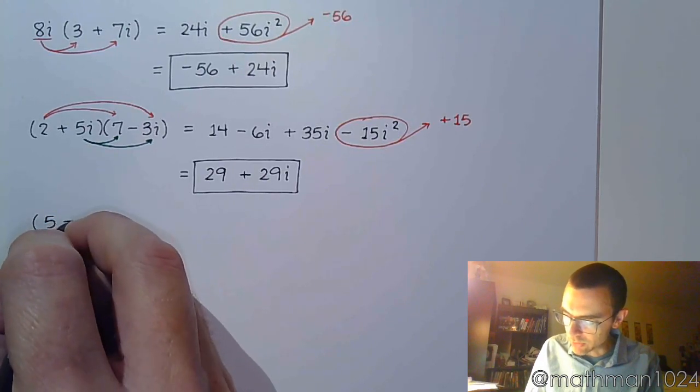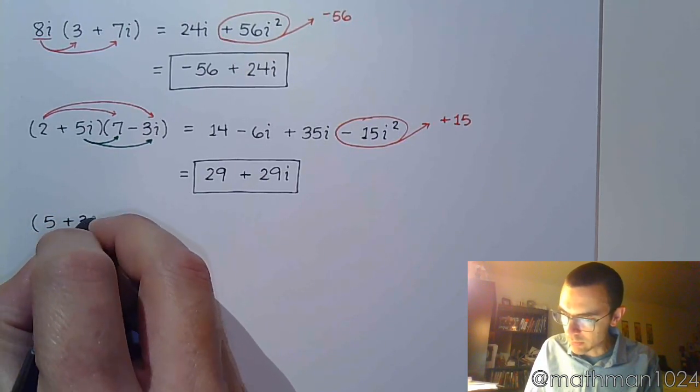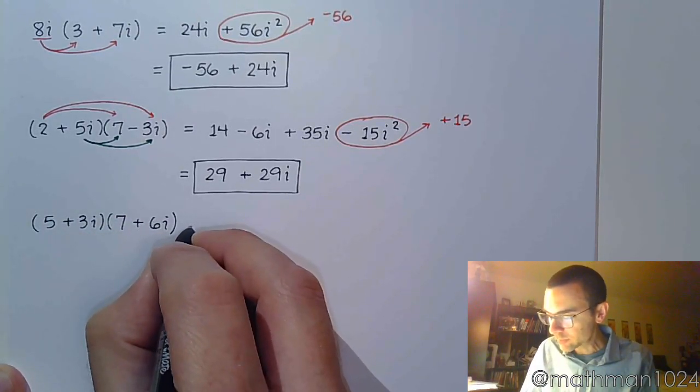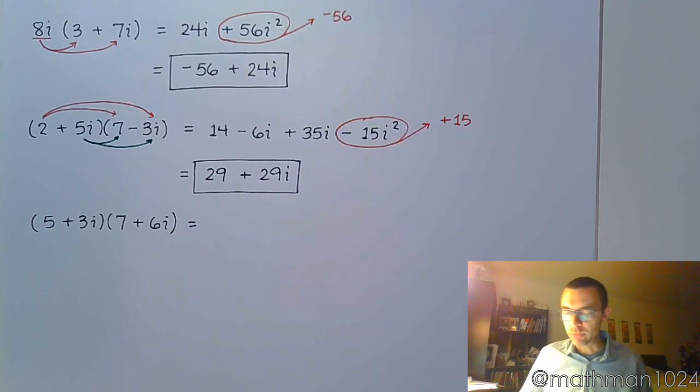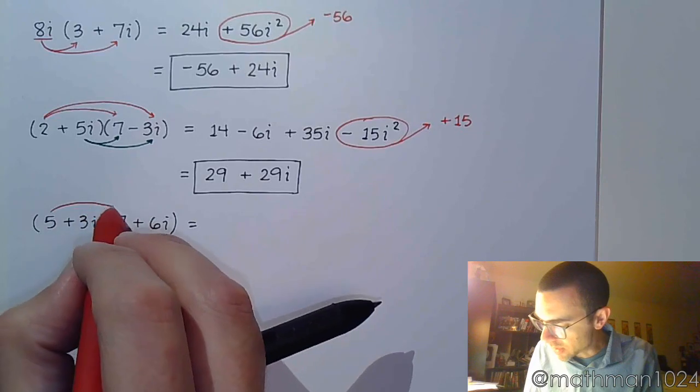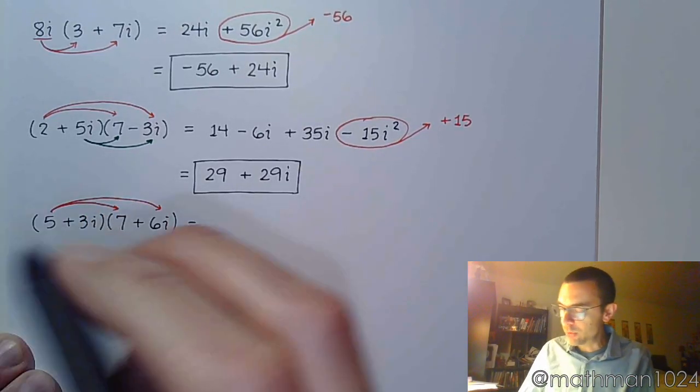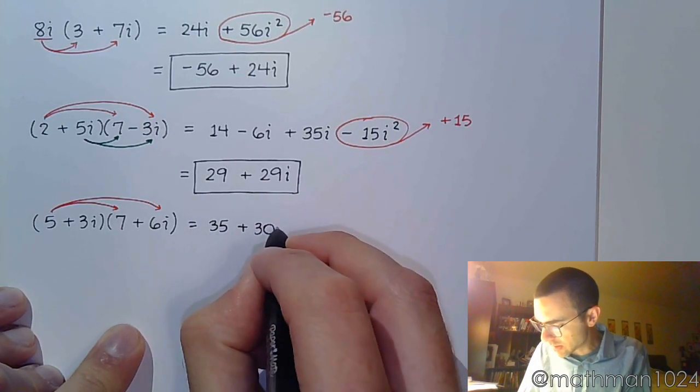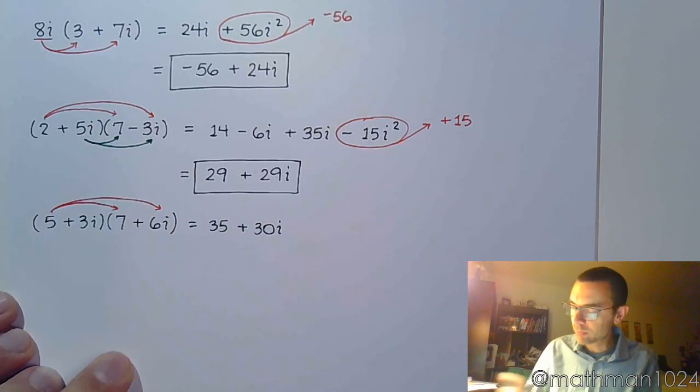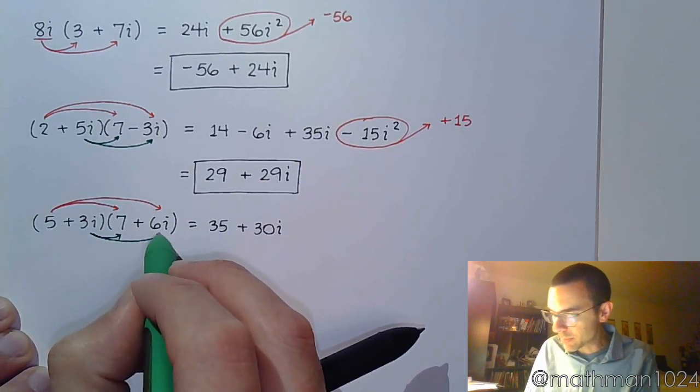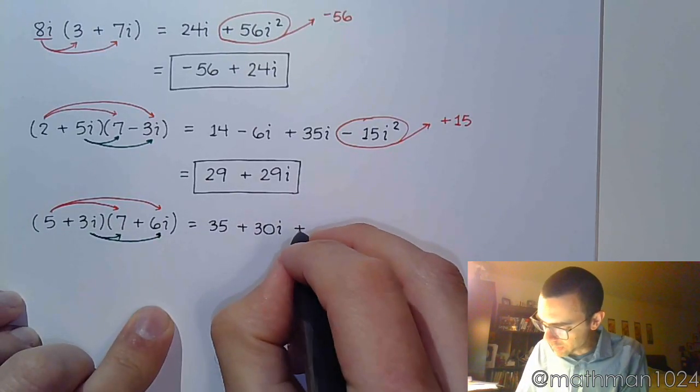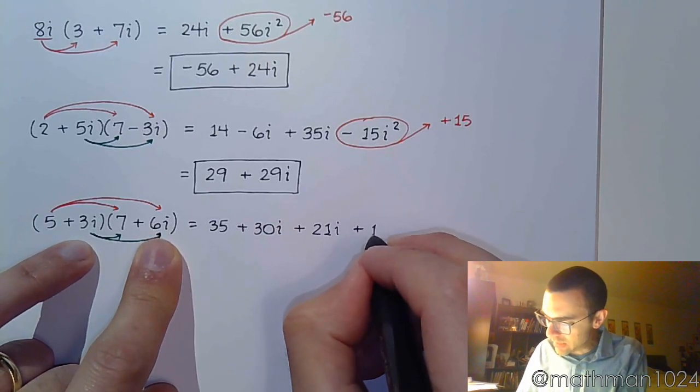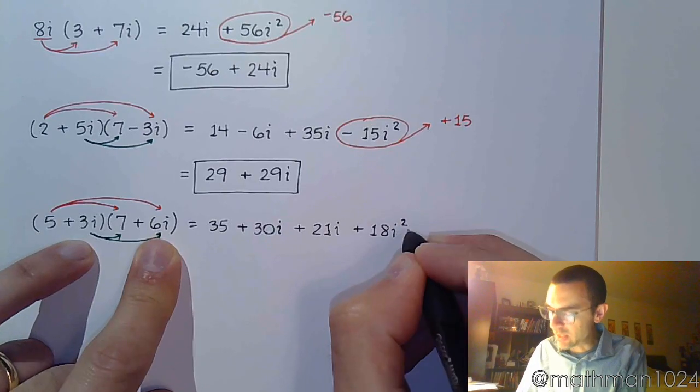One final guy here. Let's do 5 plus 3i times 7 plus 6i. And again, I'm going to work this just like the last problem. Foil. So take the 5 and distribute. So we get 35 plus 30i. Take the 3i and distribute here. So that is plus 21i. 3i times 6i, that's going to give me 18. But i times i is i squared.